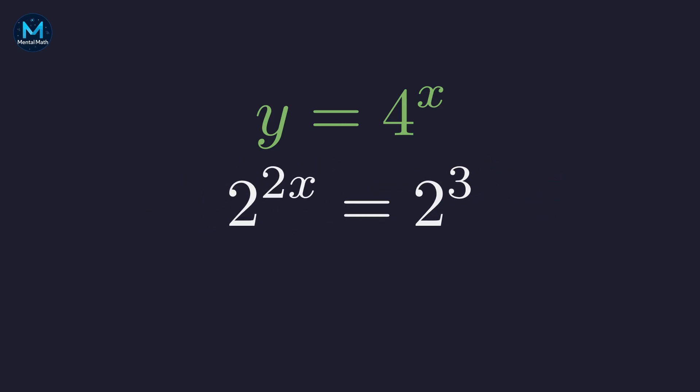we get 2 to the 2x. Same base on both sides, so we can equate the exponents. 2x equals 3. Dividing by 2, x equals 3 halves.